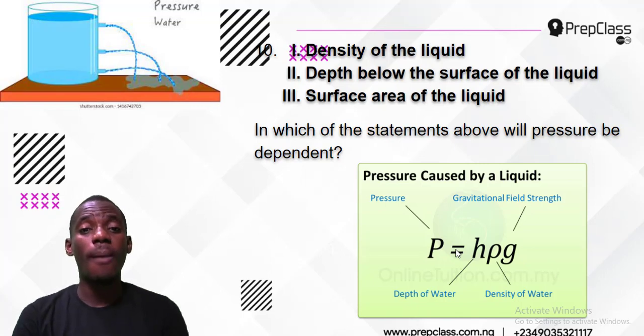Here is the formula for pressure in liquid. Depth affects pressure, and density affects pressure. But surface area of liquid does not affect pressure in liquid. So this is wrong.